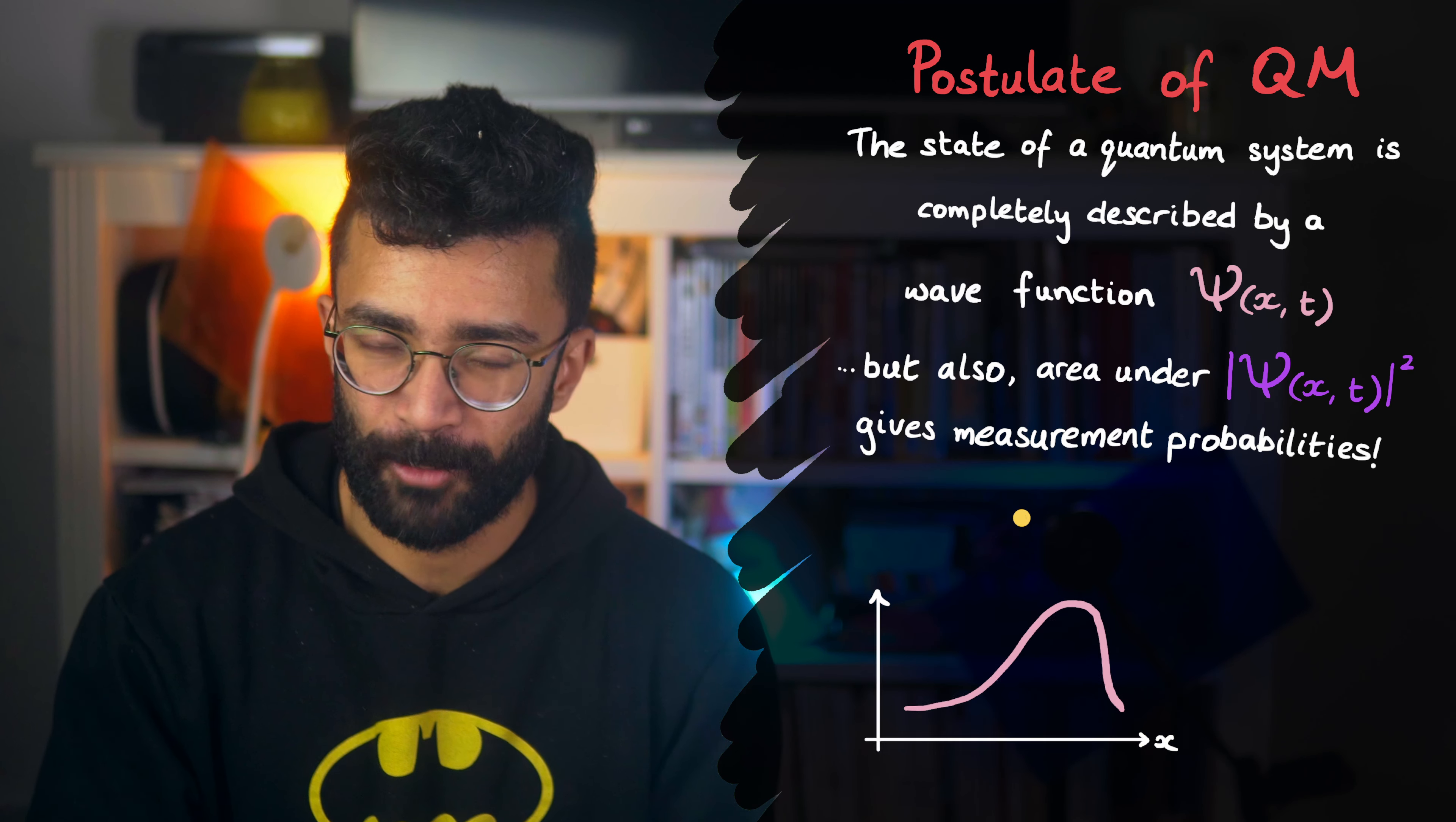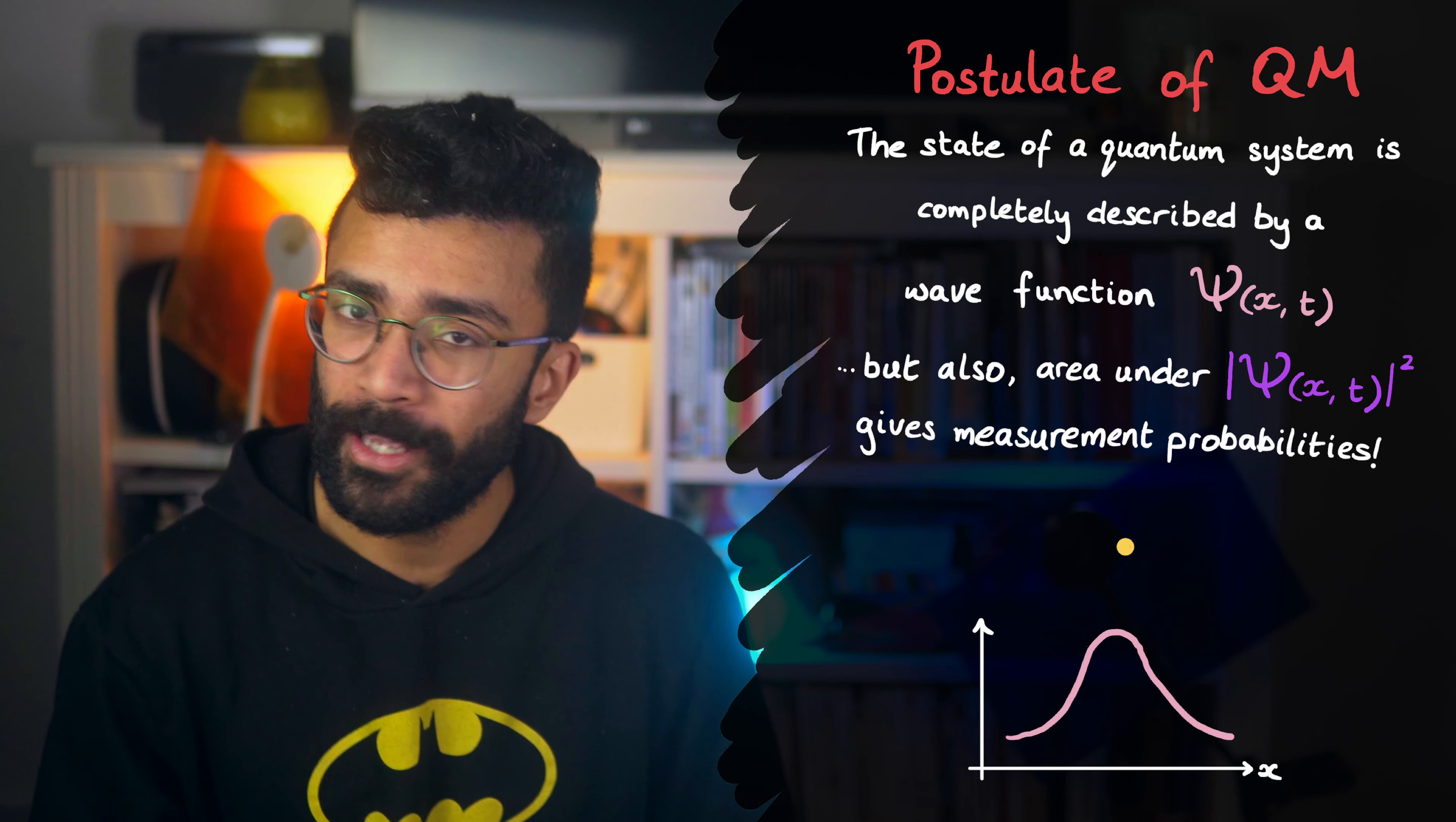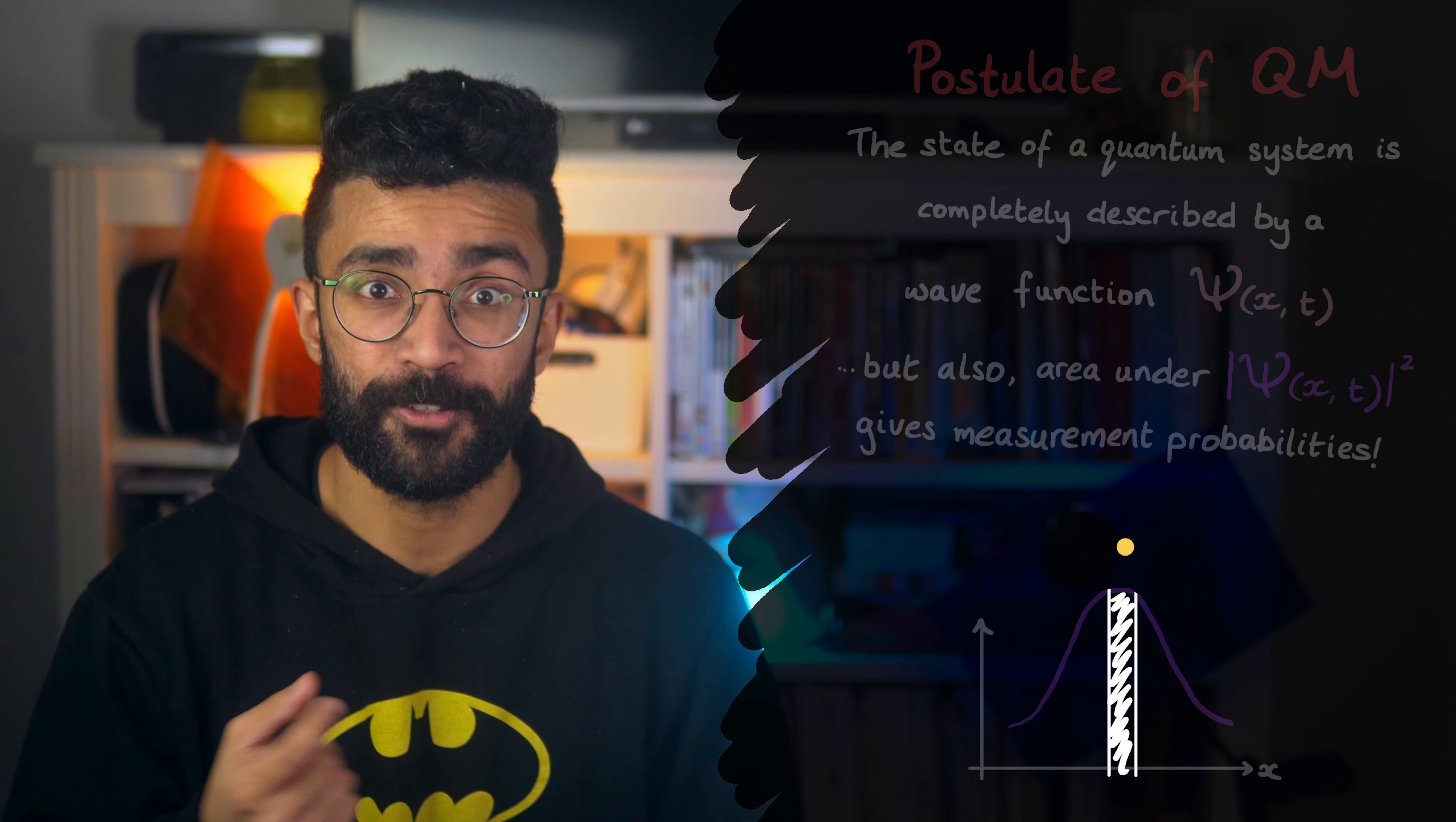But this postulate that we've just looked at also introduces another link between real systems and their math. It says that if we want to find some probability, let's say the likelihood that we will find our electron in this region of space, then we take the square of our wave function, technically the square modulus, and we find the area under the wave function squared graph that corresponds to that region of space.